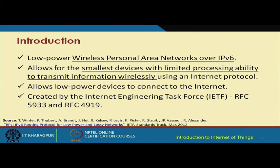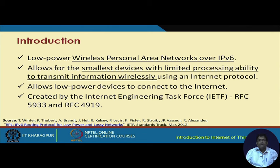6LoWPAN stands for Low Power Wireless Personal Area Network over IPv6. It allows the smallest devices with limited processing ability to transmit information wirelessly over the internet protocol. So we have low power, small devices, limited processing capability — as is typical of IoT systems — with wireless communication present.